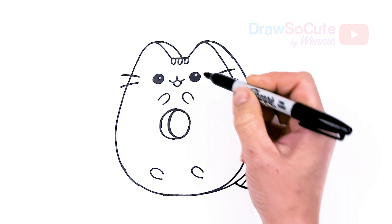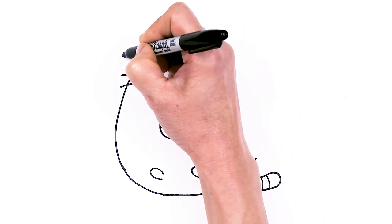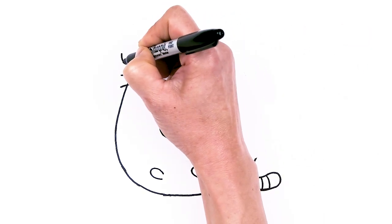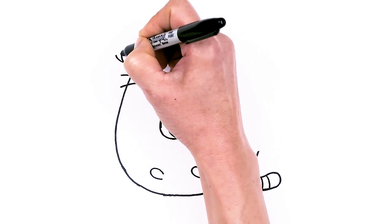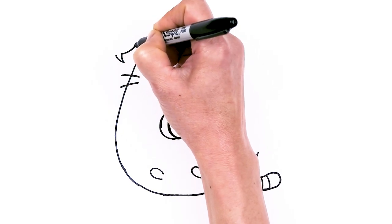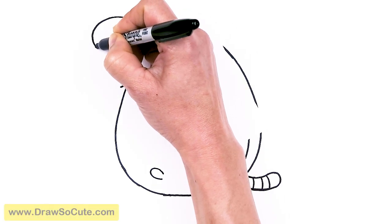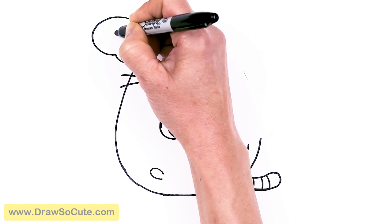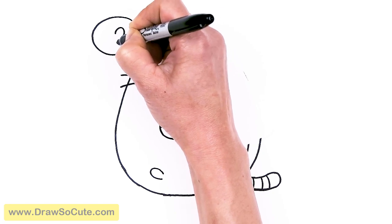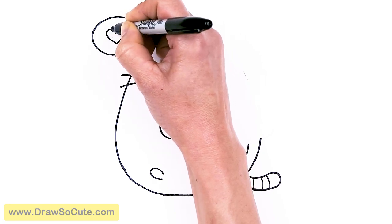And then last but not least, let's give a little speech bubble if you want. So come to the sides right here. You can put in one speech bubble because this is kind of to celebrate Valentine's. So if you want to do that, just come right here with this big circle and then we're just going to put in a heart right here. Just to spruce it up.